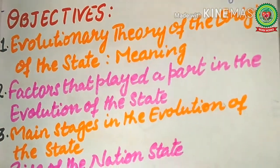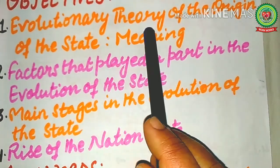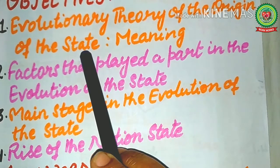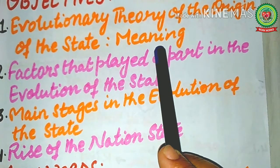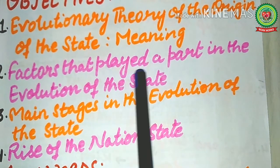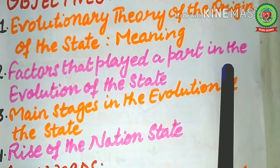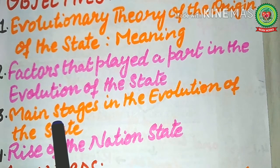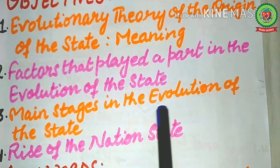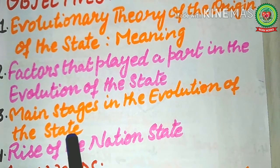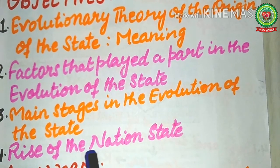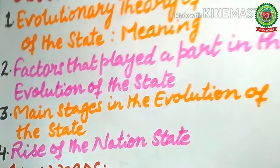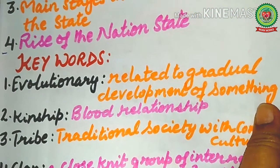The objectives of today's class are: the evolutionary theory of the origin of the state, its meaning, the factors that played a part in the evolution of the state, the main stages in the evolution of the state, and the rise of the nation state.